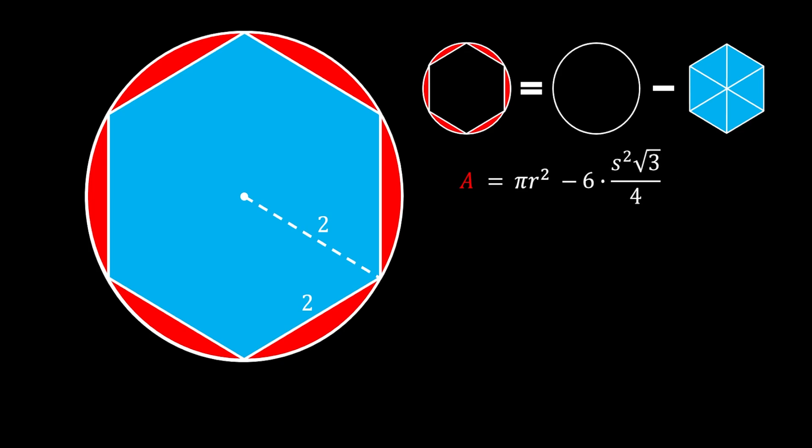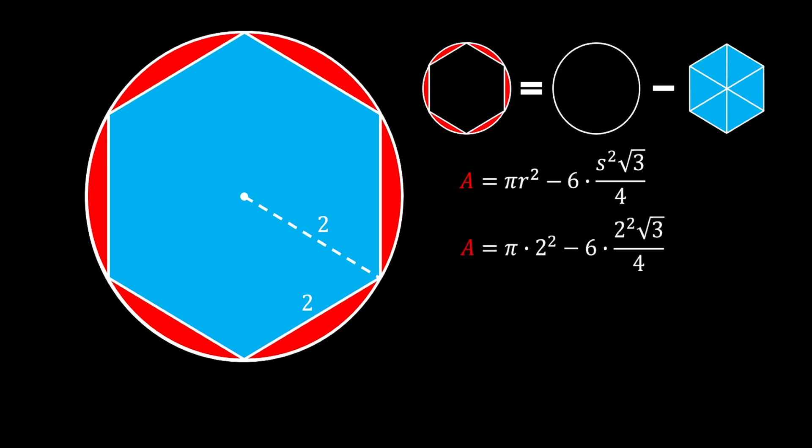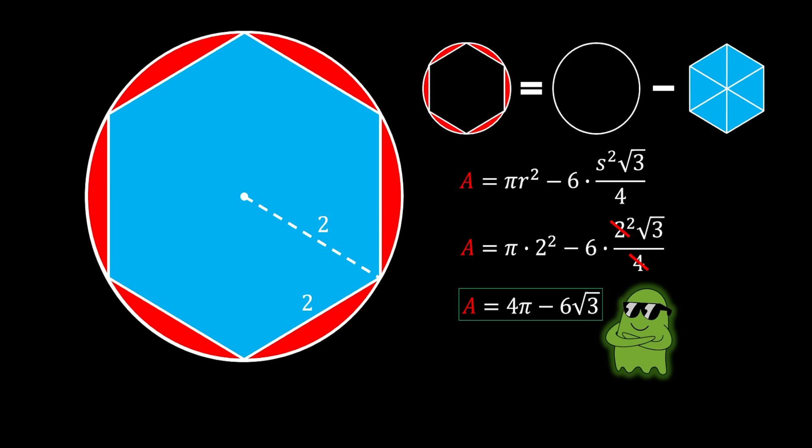Now we're just going to use this formula and substitute our values. We simplify the right side and get the same solution of 4π minus 6√3 square units — again, the same answer. Alright, I really hope you enjoyed this interesting problem. Remember, the challenge this time is to find a completely different method from those I have shown you here. If you do, write it down in the comment section below. As always, until next time, see you all, and take care.